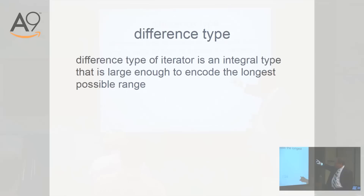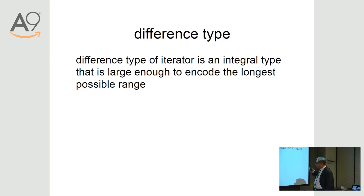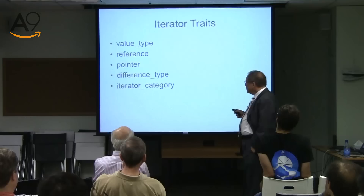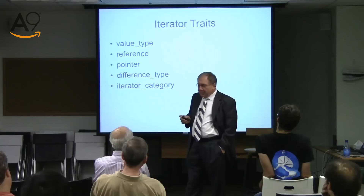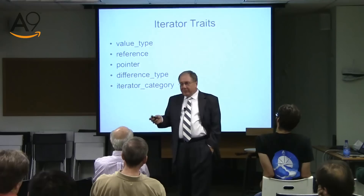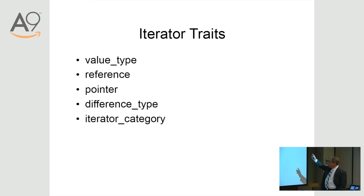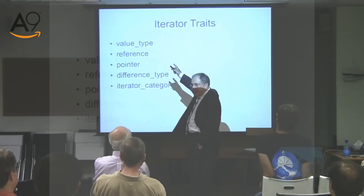Now the formal definition of difference type: difference type of an iterator is an integral type that is large enough to encode elements of any range of that type. You have to think about what it is when you design your stuff. But how do we get it? Here we get to something which starts logical and beautiful, but then gets into linguistic ugliness. So there are things called iterator traits — iterator traits are all types affiliated with an iterator type, and there are a whole bunch of them.